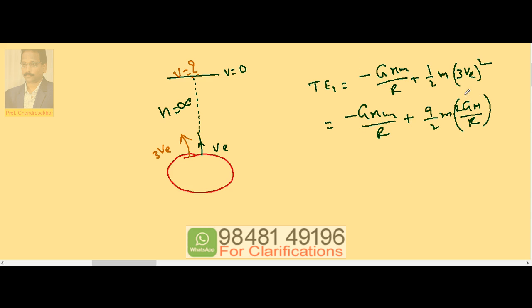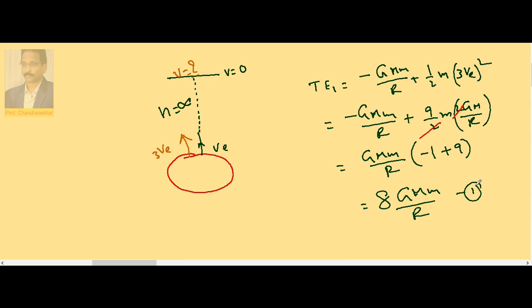I can cancel these terms. So remaining, if I take GMm/R common, this is -1, this is 9, so it is 8GMm/R. Now at infinity, what is the possible energy?